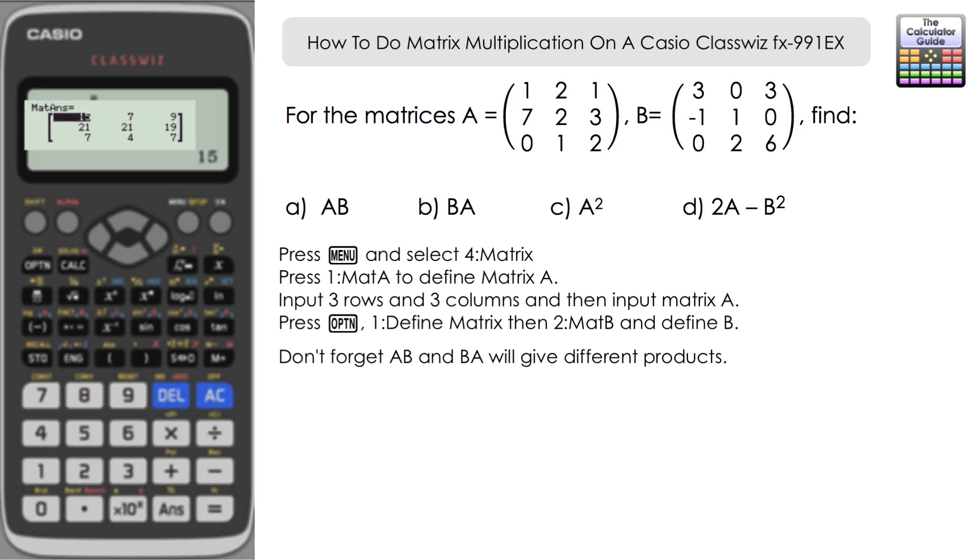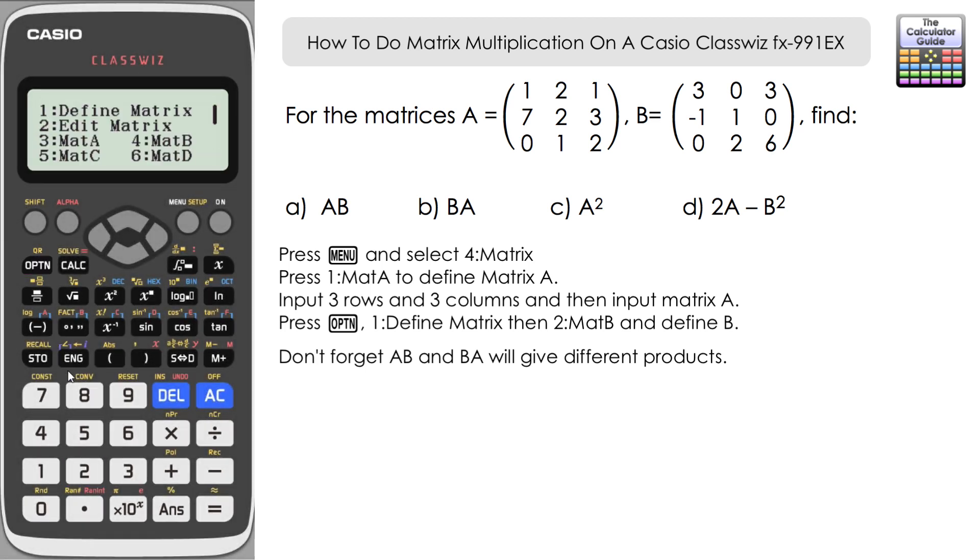And then 2A minus B squared. Again, just be careful here to recall matrix A minus matrix B squared. And here is the solution.